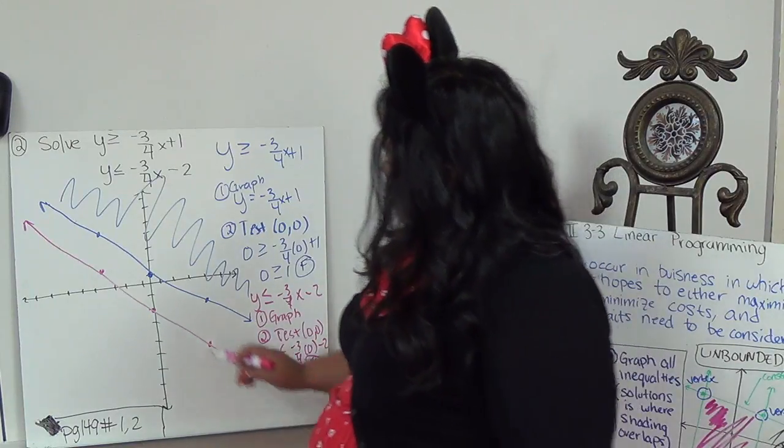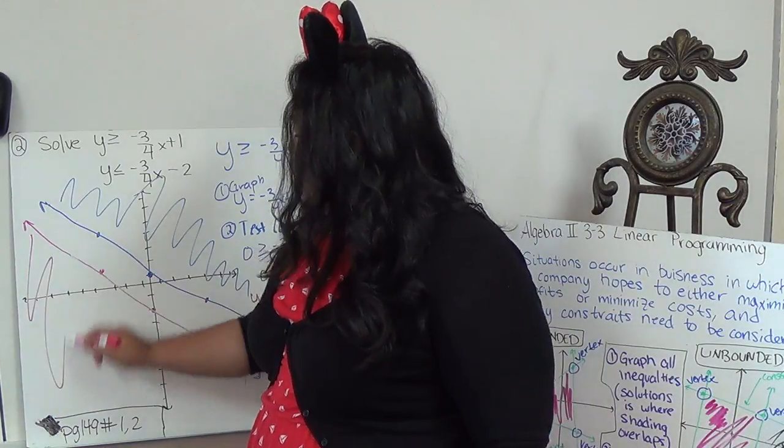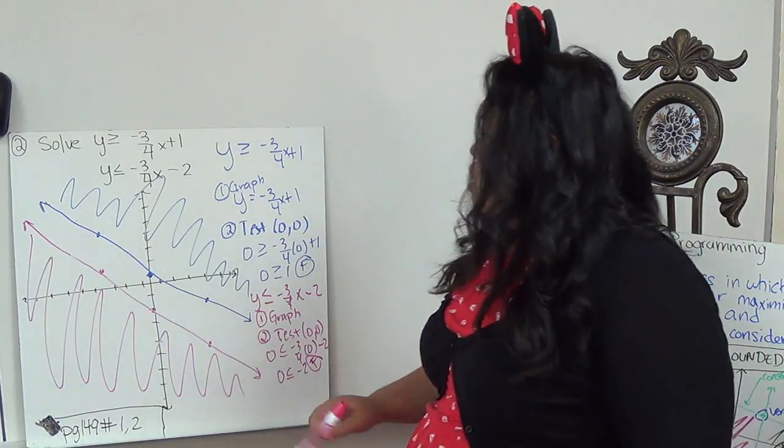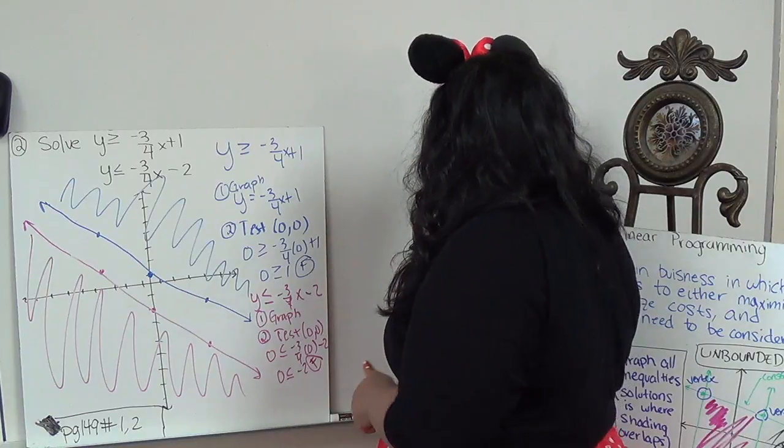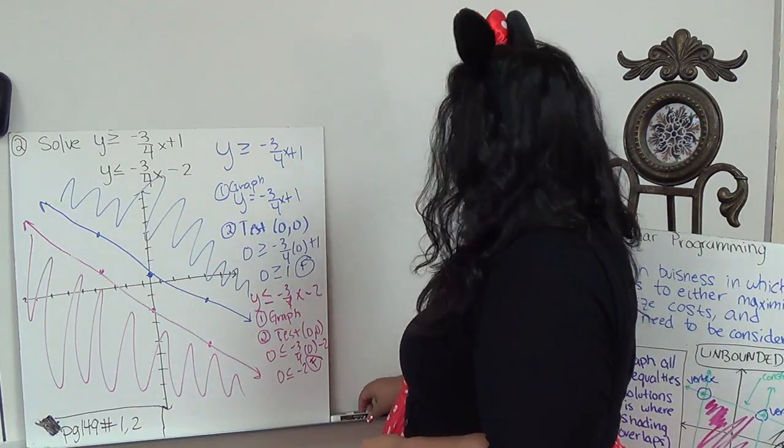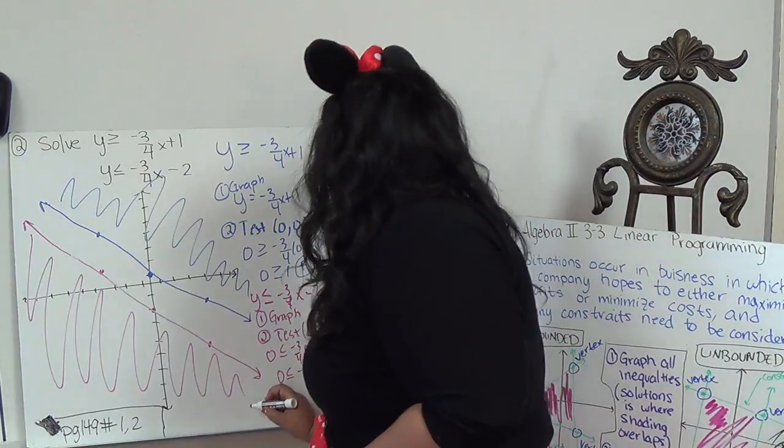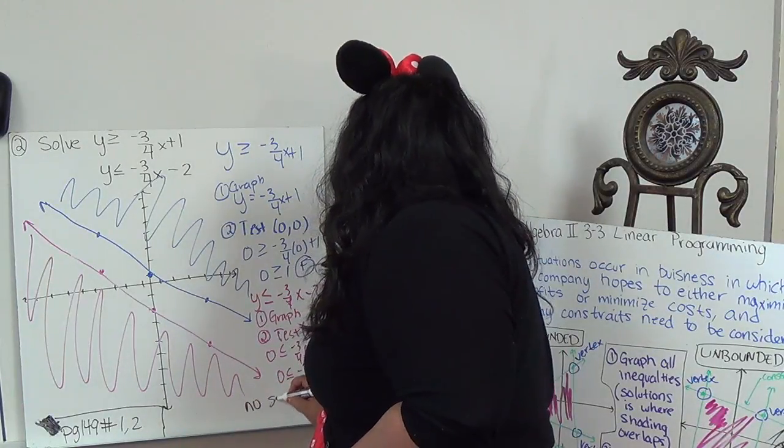So that means I'm going to shade the opposite side, which is here. So in this case, the two shaded regions do not intersect, they do not overlap. So this, because there's no overlap, is no solution.